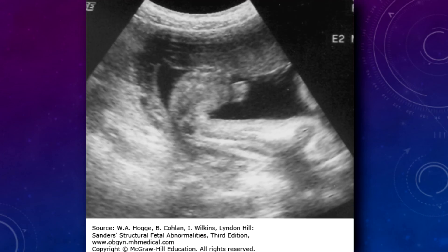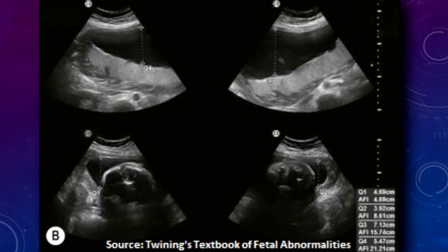Once you're done with your fetal exam, you can continue on to the amniotic fluid. The amniotic fluid can be completely anechoic or can sometimes have echogenicities called vernix. You want to measure the amniotic fluid and take what's called an amniotic fluid index. You divide the uterus into four quadrants and measure the largest vertical pocket in each quadrant, excluding any fetal parts or cord. The sum of those four quadrants gives you your amniotic fluid index.